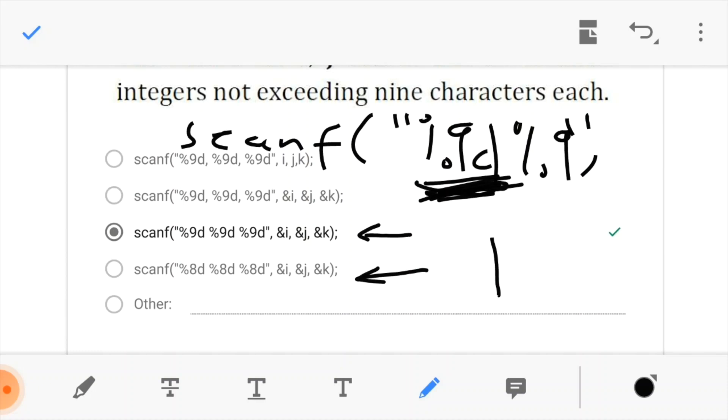And the question said that the integers that we want should not exceed 9 characters each, which means we want to keep them in a minimum field width of 9. So, if it is less than 9, the remainder would be filled with spaces.